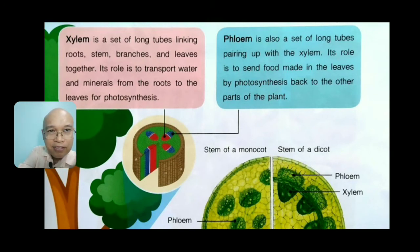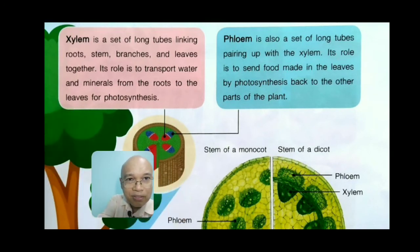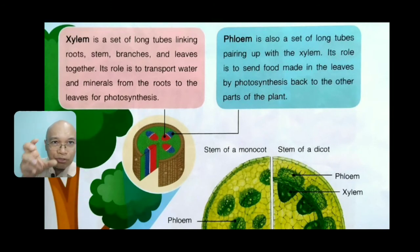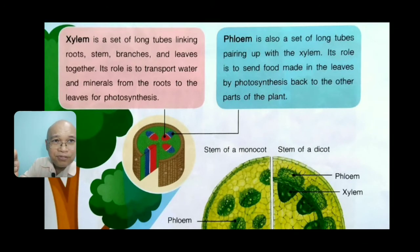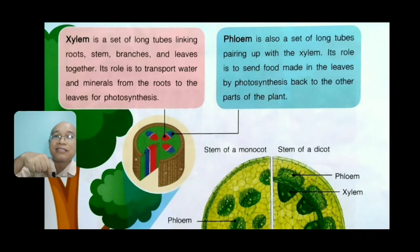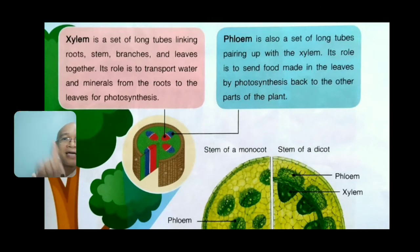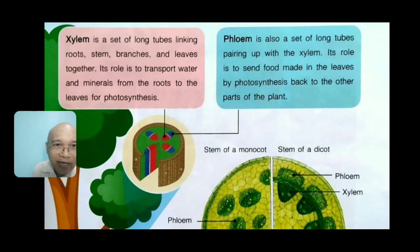You can see the xylem as the red part in the picture. The phloem is also a set of long tubes pairing up with the xylem. Its role is to send food made in the leaves by photosynthesis back to the other parts of the plant. So remember: xylem carries water going up, phloem carries food going down.